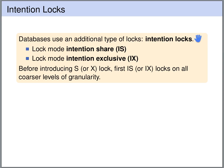We've seen shared locks to read objects and exclusive locks to write objects, and now we also have intention shared and intention exclusive locks — abbreviated as IS and IX respectively. The idea is that before a transaction can lock an object in shared or exclusive mode, it first has to introduce intention shared or intention exclusive locks on all the coarser levels of granularity. For instance, if a transaction wants to lock a row in exclusive mode, it first has to obtain an intention exclusive lock on the database and on the table containing the row, and only if these are granted can it obtain the exclusive lock on the row.